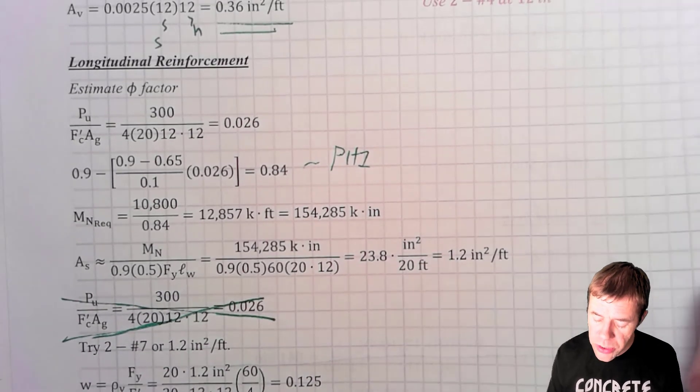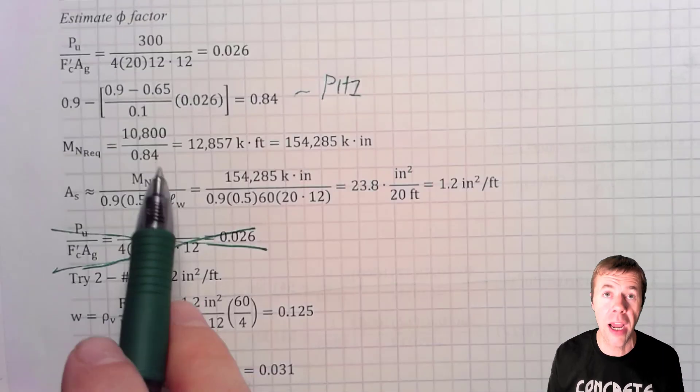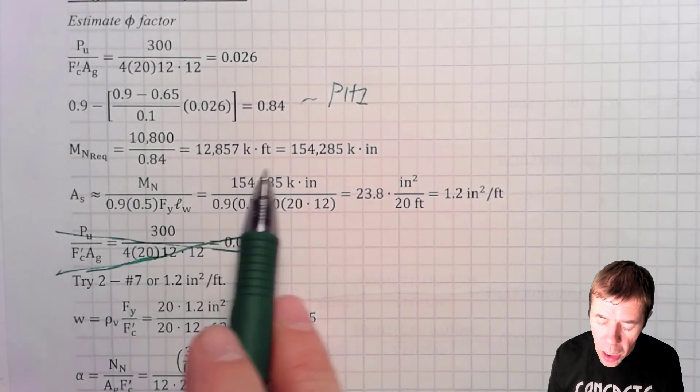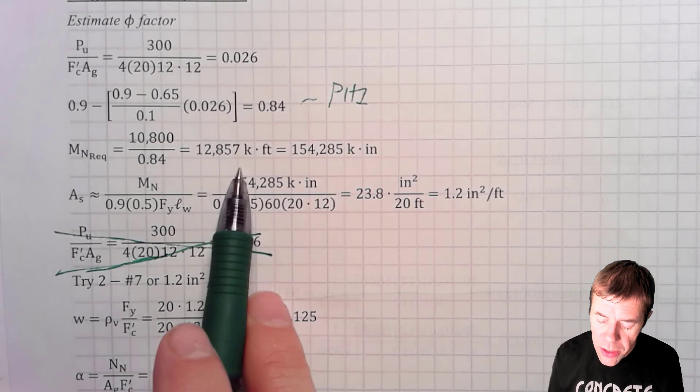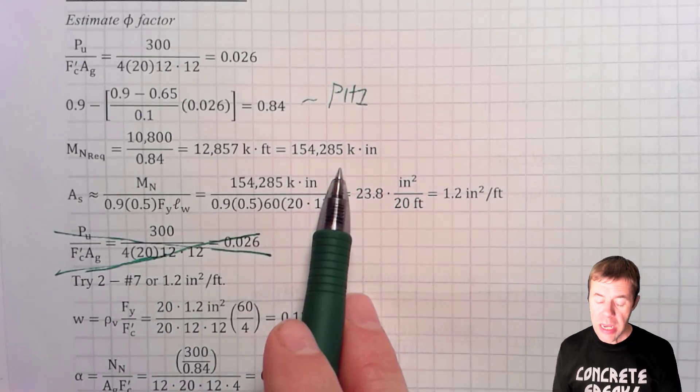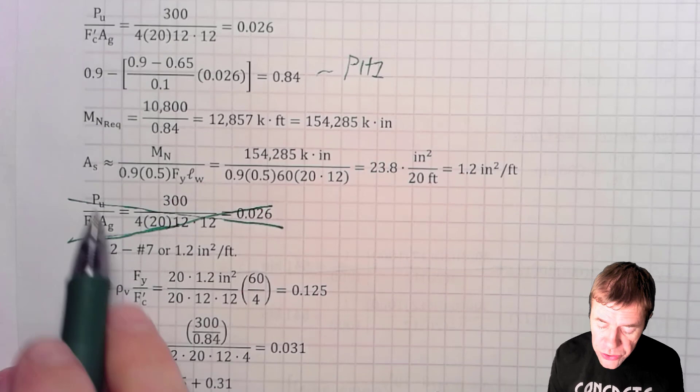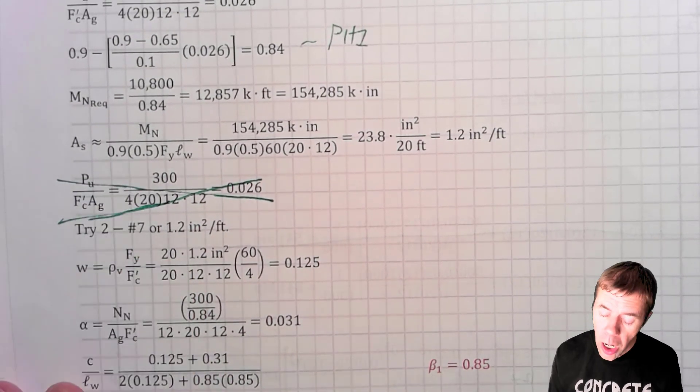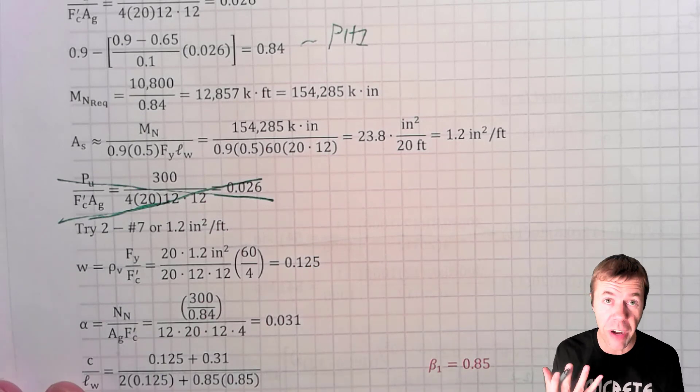Now I use that phi factor to figure out what I have to design for. This 1080 divided by 0.84 gives me what my moment is and I put it in kip inches. Now I have to figure out how much steel I need. This is this equation where I've assumed it's 0.9. There's a lot of things. I simplified it.